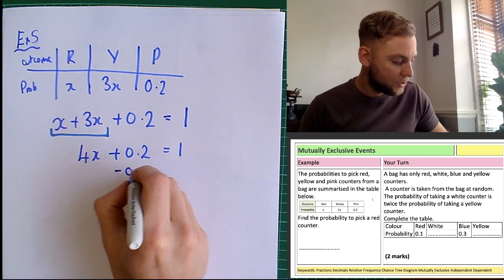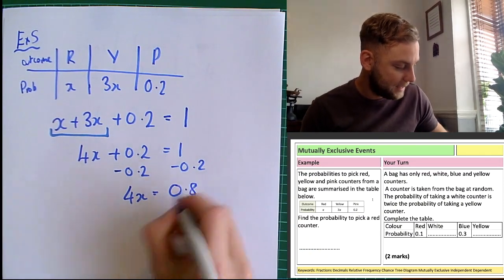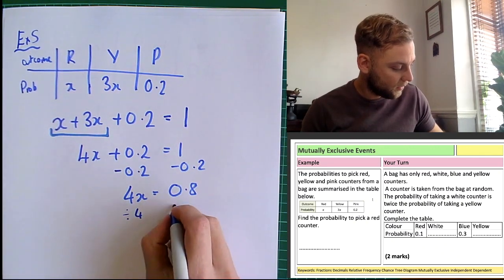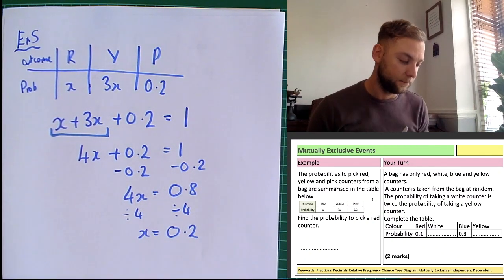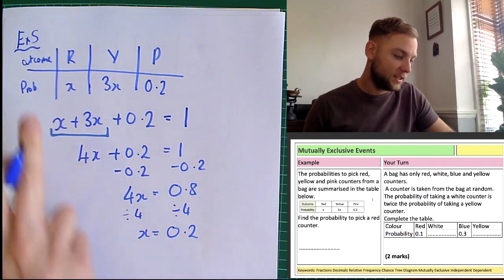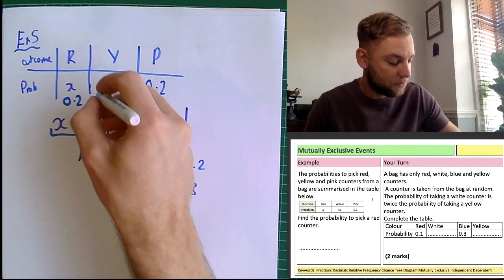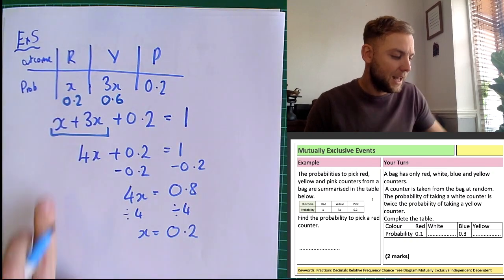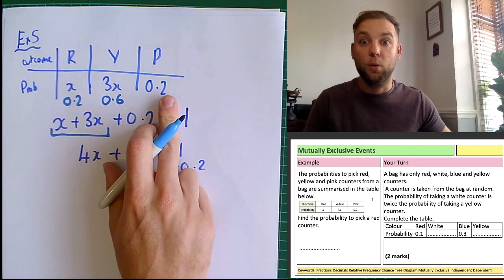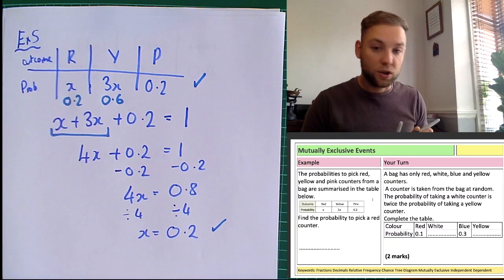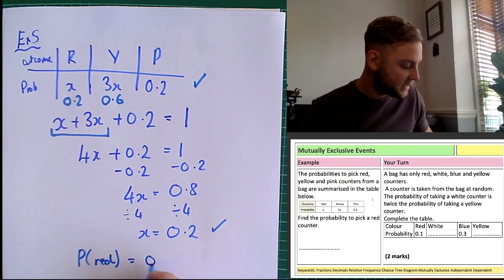Now solve it: minus 0.2 from both sides gives 4x equals 0.8, then divide by 4, so x equals 0.8 divided by 4, which equals 0.2. We can check: red is 0.2, yellow is 3 times that which is 0.6, and pink is 0.2. So 0.2 plus 0.6 plus 0.2 equals 0.8 plus 0.2, which equals 1. So the probability of picking red is equal to x, which is 0.2.